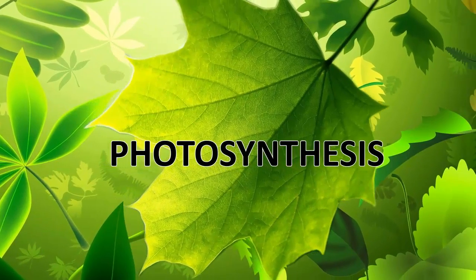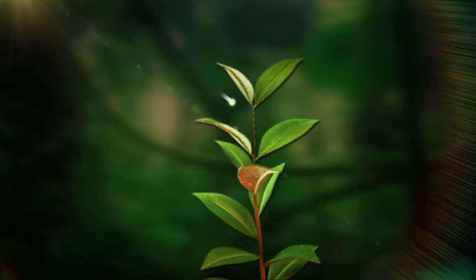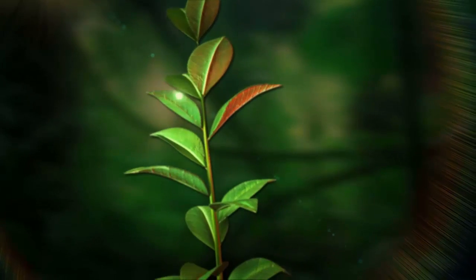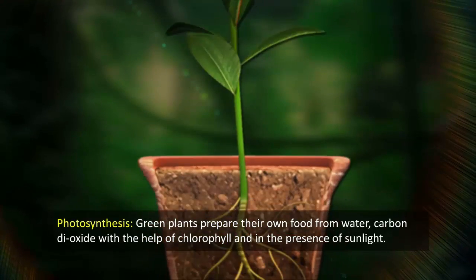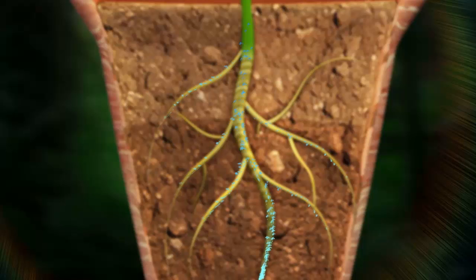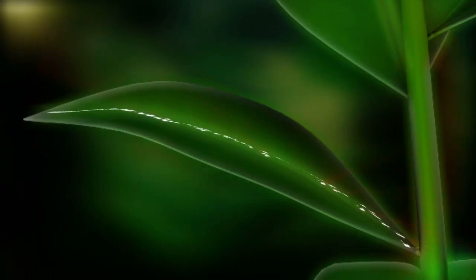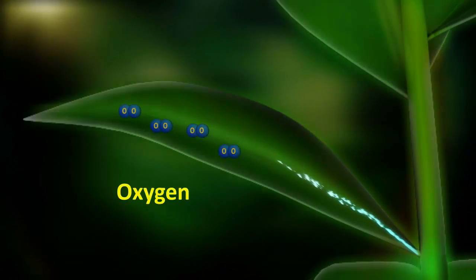Process of photosynthesis: Green plants prepare their own food from water and carbon dioxide with the help of chlorophyll in the presence of sunlight. This process is called photosynthesis. Materials required include water, carbon dioxide, chlorophyll, and sunlight. Products of photosynthesis are glucose and oxygen.